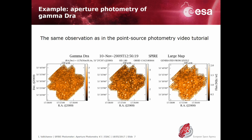The SPIRE photometer observed simultaneously in three broad bands in the far infrared, centered on wavelengths of 250, 350, and 500 microns. The pipeline processing produces maps in each of the three bands, and each one has at least two versions: optimized for point sources and optimized for extended emission. The point source calibrated maps are in units of Jansky per beam, while the extended source calibrated maps are in units of mega-Jansky per steradian.